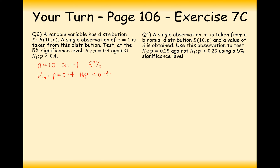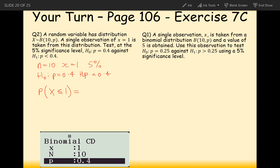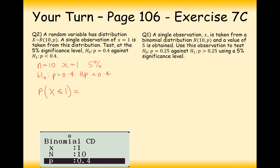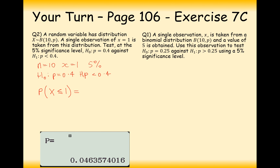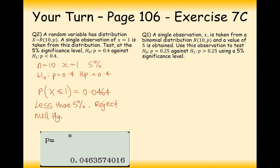We look at the lower part of the distribution: P(X ≤ 1), i.e. 0 or 1 penalties being scored. Using binomial CD on the calculator with X = 1, trials = 10, and P = 0.4, we get 0.0464, which is less than 5%. Since it's less than 5%, we reject the null hypothesis — something has changed, perhaps nerves, causing a lower success rate than 40%.